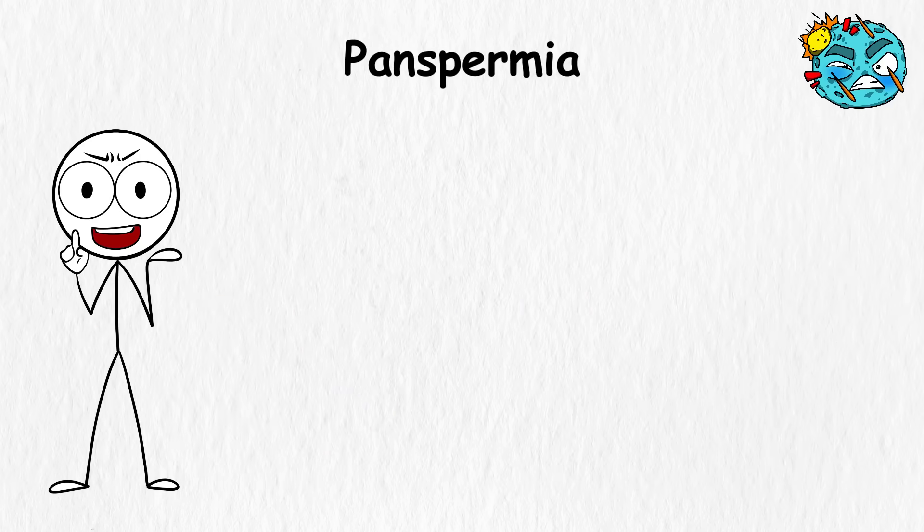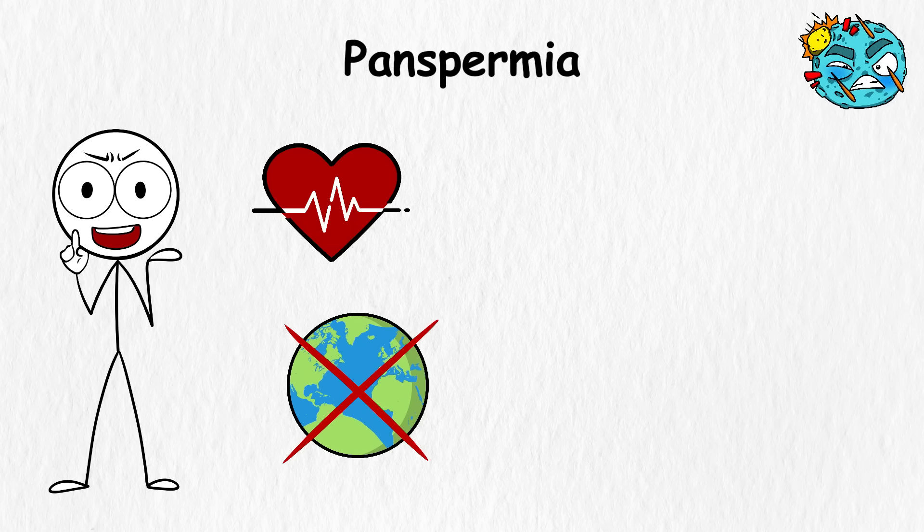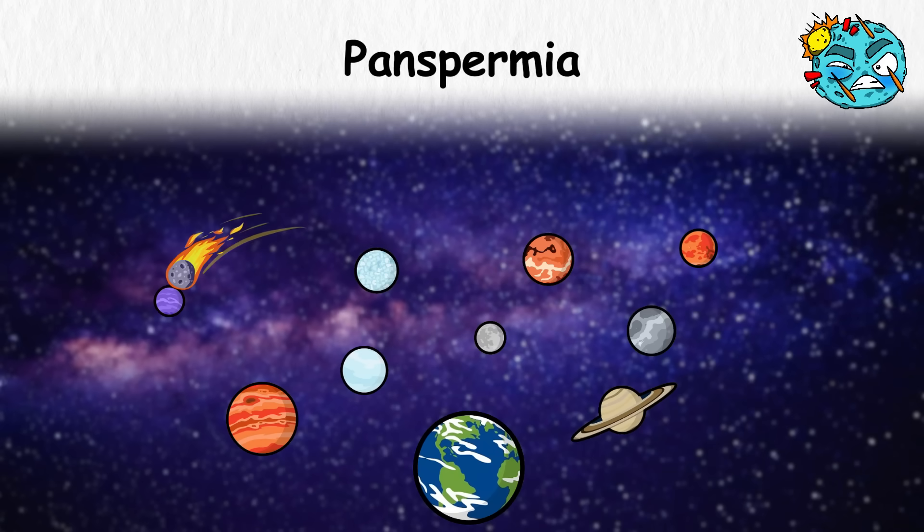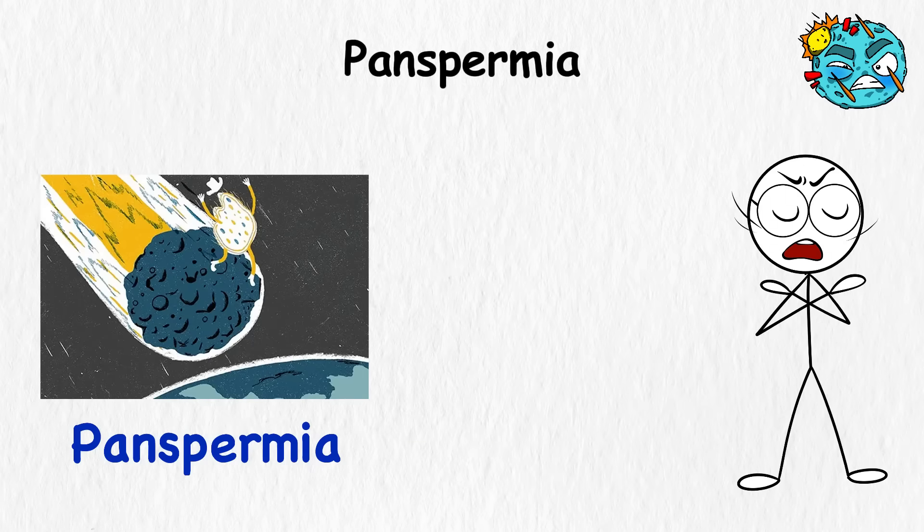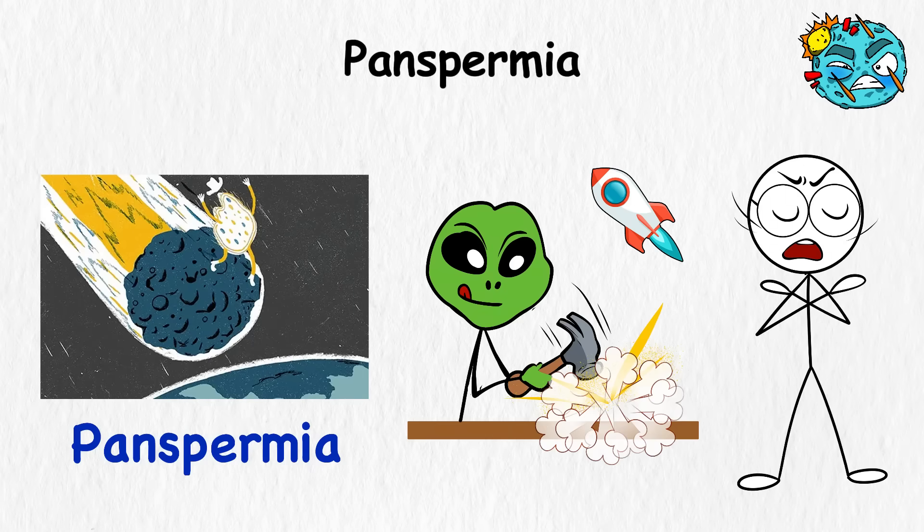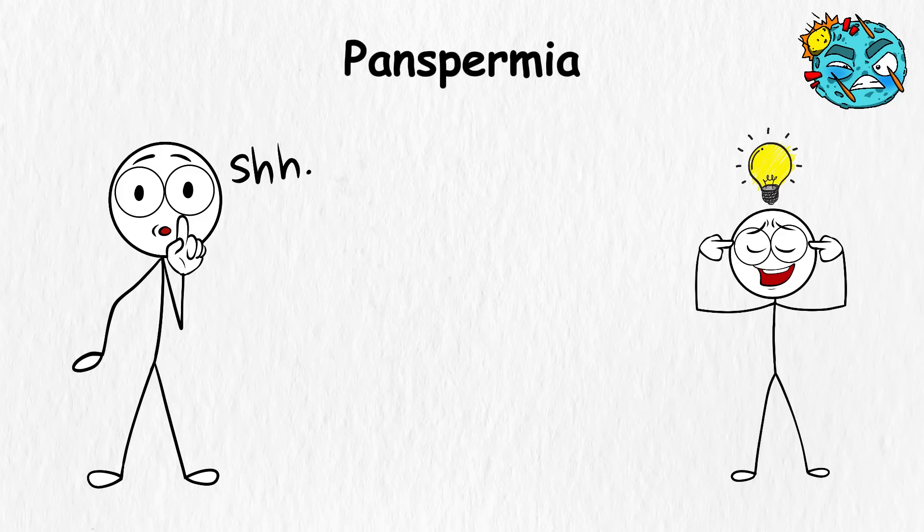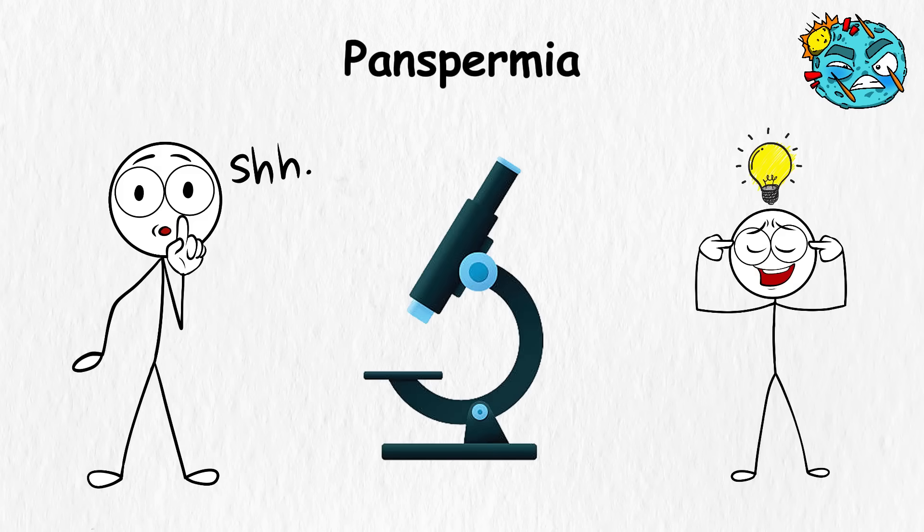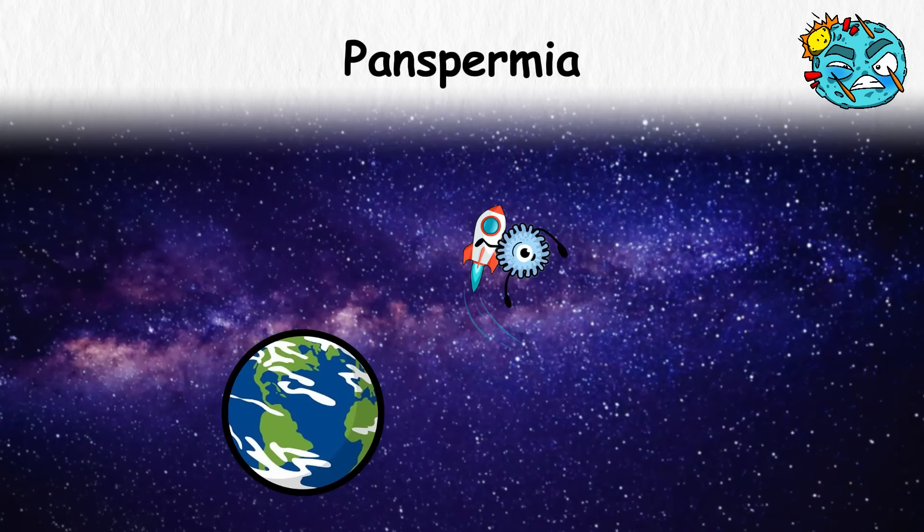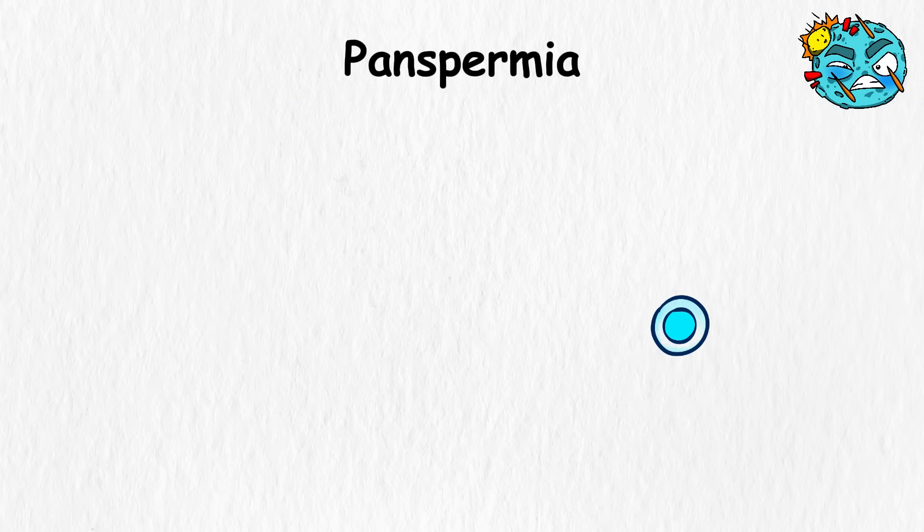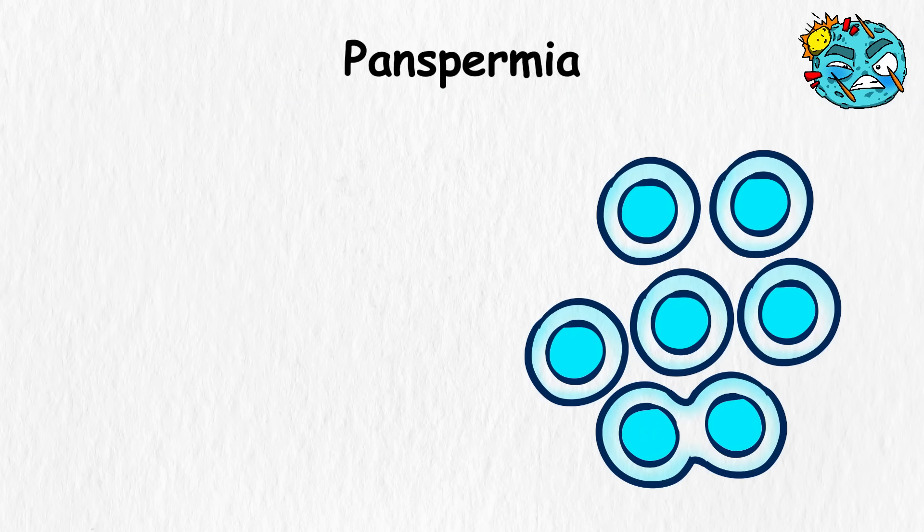Panspermia. According to this theory, life didn't start on Earth, it drifted here. Maybe on a comet, maybe in space dust, maybe after bouncing around the galaxy for millions of years, like a lost package that finally landed in the right spot. Panspermia doesn't say aliens built spaceships or gave speeches, it's quieter than that. The idea is simple. Microscopic life, like bacteria, hitched a ride through space and landed on early Earth. Once it found water and warmth, it started growing, slowly and patiently, until single cells became something more.